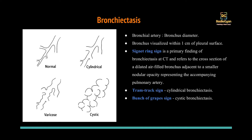The imaging signs of bronchiectasis: normally the bronchial artery and bronchus are of the same diameter. When there is bronchiectasis, the bronchus dilates more than the bronchial artery. Once the bronchus becomes larger than the bronchial artery, that is a sign of bronchiectasis. Also, if you see a bronchus within one centimeter of the pleura, you should think about bronchiectasis, since bronchi normally taper gradually towards the periphery.